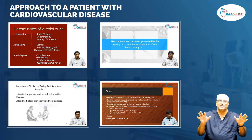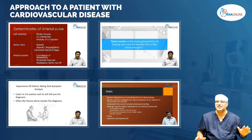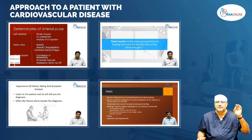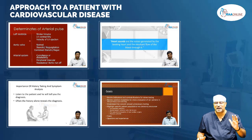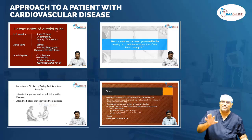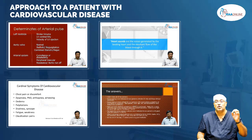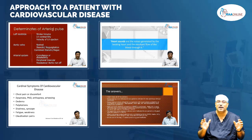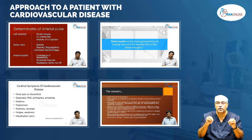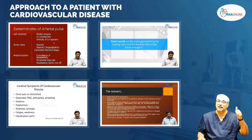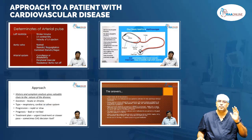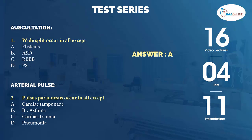Coming to approaching a patient with cardiovascular disease: this module is ideal for learners as well as clinicians looking to refresh their knowledge on cardiovascular disease. This online module is divided into clinical evaluation — which includes arterial pulse, jugular venous pulse, and auscultation — then proceeding to algorithms necessary to approach each patient with a set of findings. Finally, it proceeds to echocardiogram, explaining the basics and how to use echocardiogram in an emergency and critical setting, ending with stress testing. This module has about 16 video lectures, 4 tests, and 11 presentations.